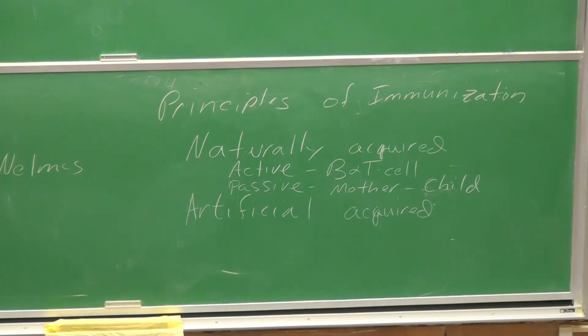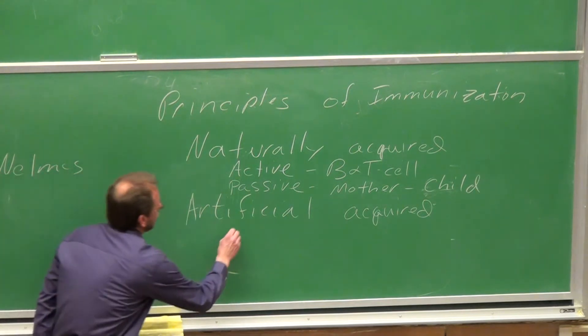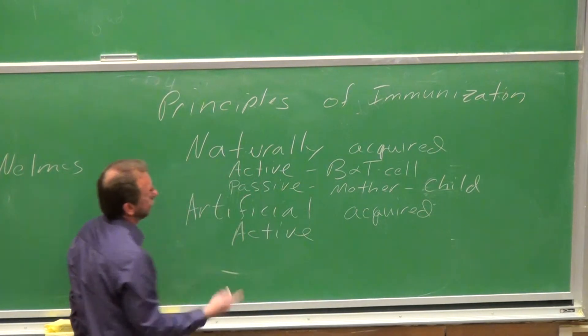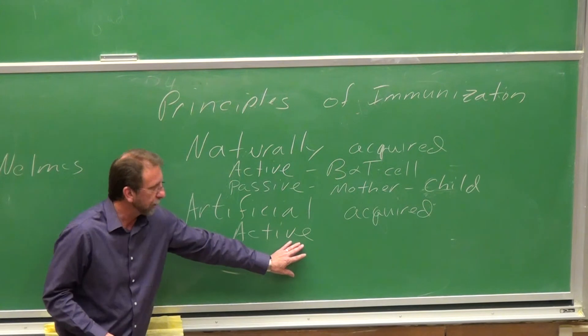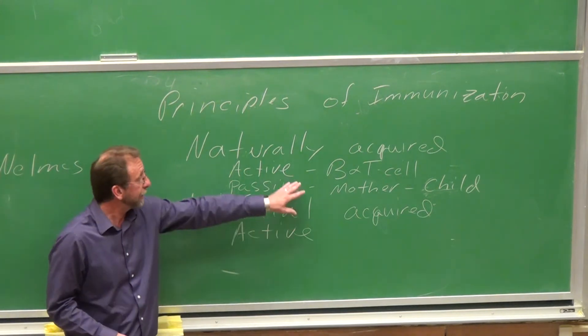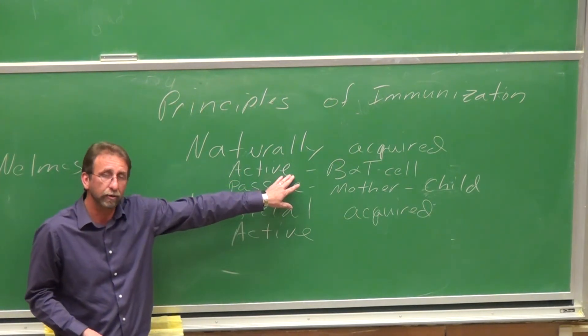Artificially acquired immunity. Again, you can have an active, artificially acquired immunity. In this case here, you are injecting an agent that is stimulating the B and T cell response.